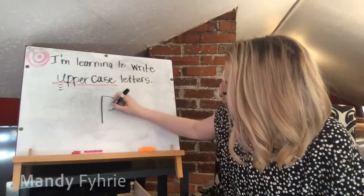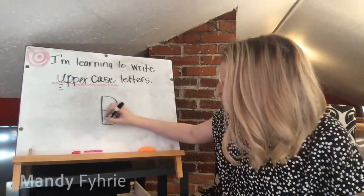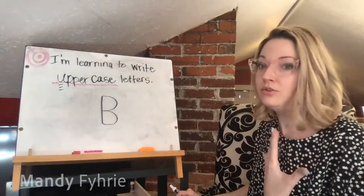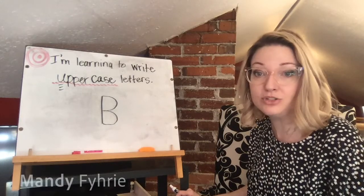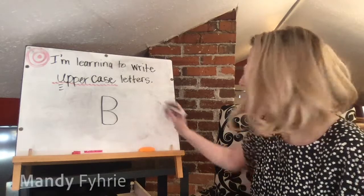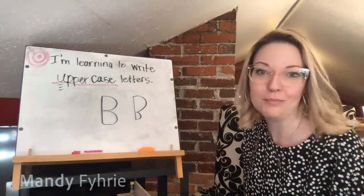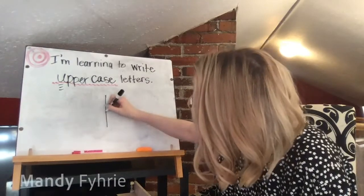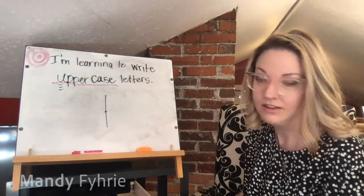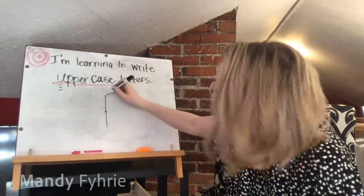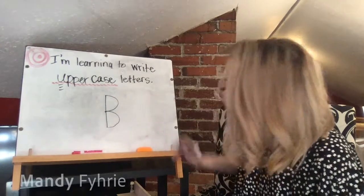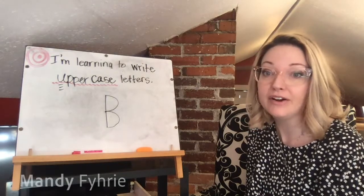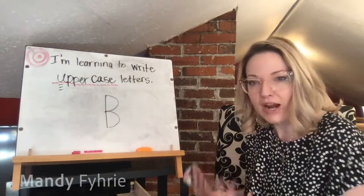Capital letter B: big line down, hop to the top, little curve to the middle, back out, and little curve to the bottom. If your bumps are looking too big or wonky, here's a trick: big line down, put a little tiny dot in the middle so you know where your bump needs to end. Little curve to the middle, little curve to the bottom. You won't need this trick forever, but it's good when you're just beginning.